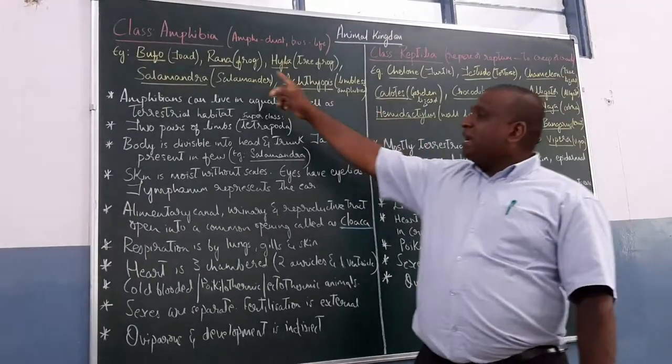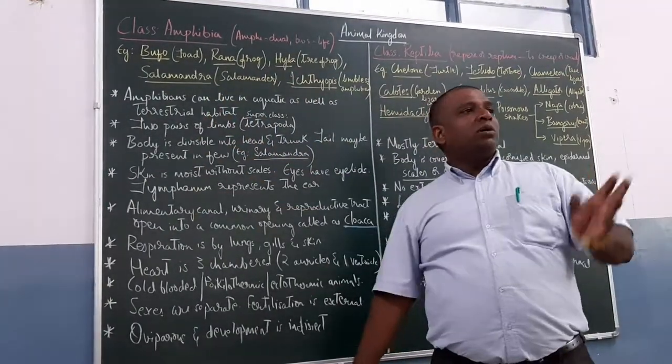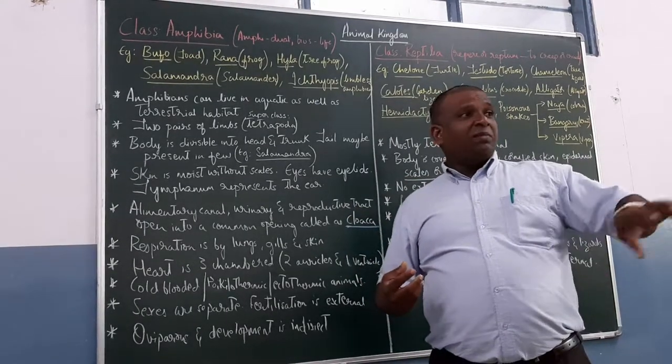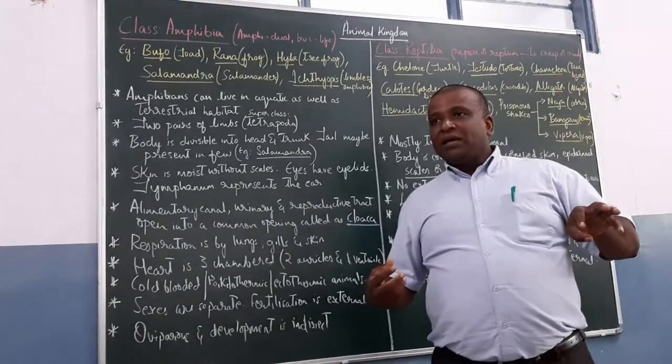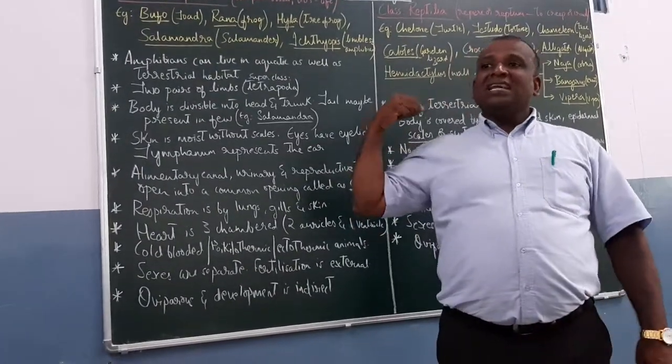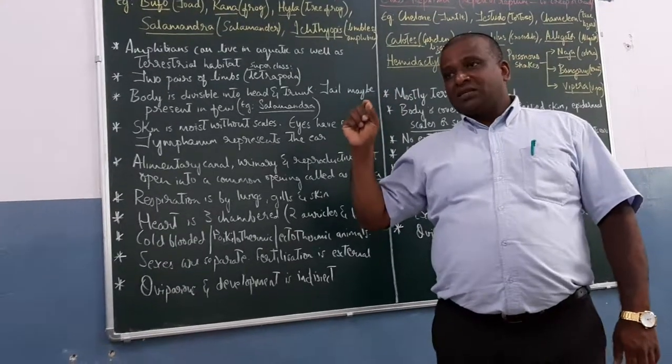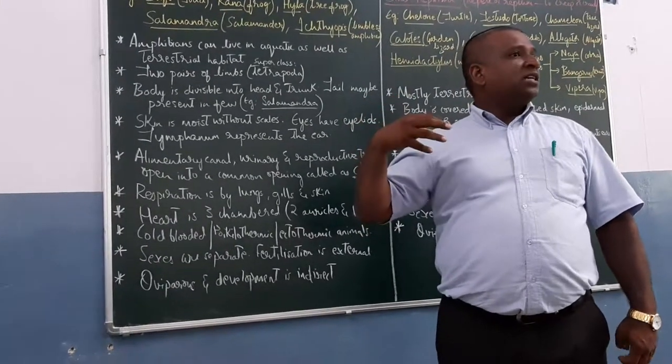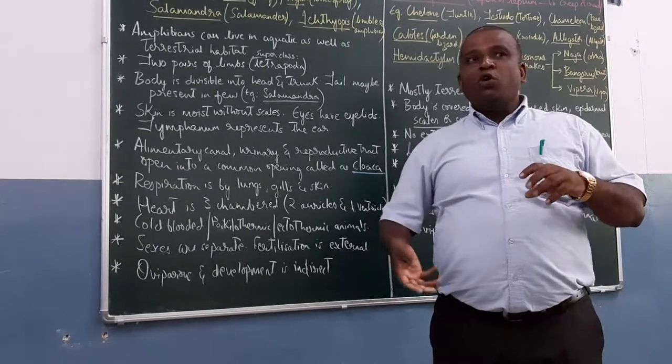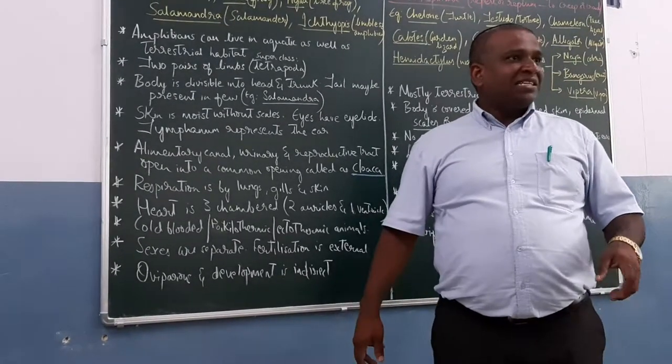So now the examples for that. Bufo, toad. Toad is larger. And if you look into the skin of toad, most of them are land forms, terrestrial forms. And they have a dry skin with poisonous glands on them. Poisonous warts are found on the toad.